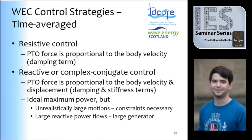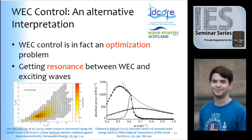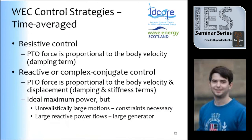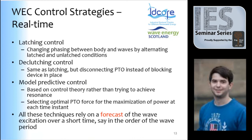There are different types of strategies developed over the years. Some are time-average, like resistive and reactive control — you look at an average over the period of the waves, and assume the control force is proportional to a damping, or a damping and a stiffness term, and you adjust these to increase the curve. Complex conjugate includes stiffness; resistive uses only damping. Alternatively, you can work in real time: latch the device for part of the wave cycle and release it, or declutch it — let it go for part of the wave cycle and then control it again.